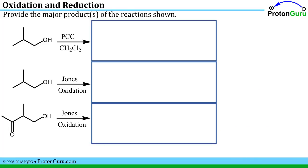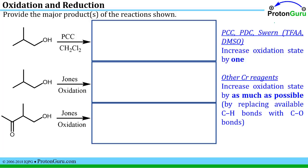The other type of problem covers providing products of oxidation reactions of alcohols. There are many different oxidizing reagents, and it's important to know how strong they are. PCC, PDC, and the Swern oxidation — which involves trifluoroacetic acid and DMSO — are only capable of increasing the oxidation state by one unit, creating one new carbon-oxygen bond. The other chromium reagents increase the oxidation state by as much as possible by replacing all of the carbon-hydrogen bonds on the alcohol carbon with carbon-oxygen bonds.